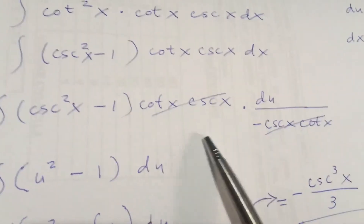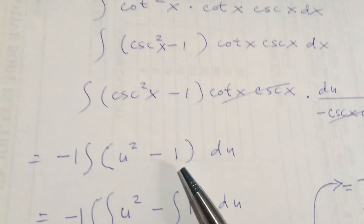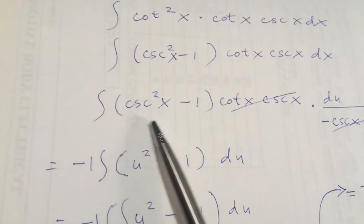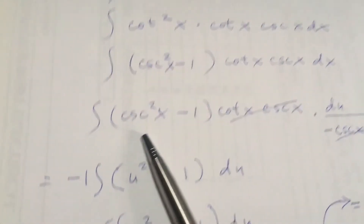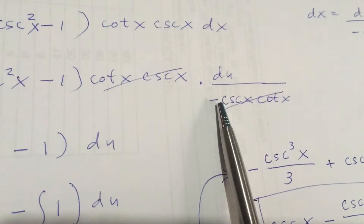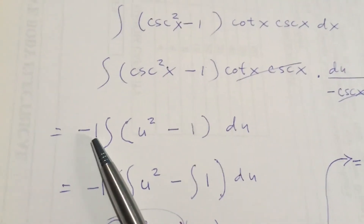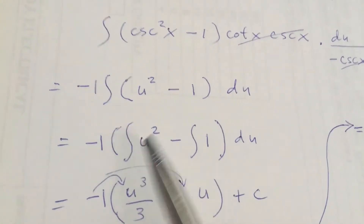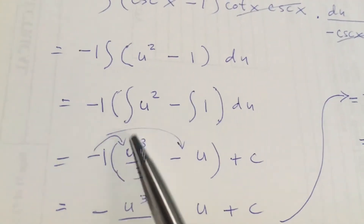Substitute the dx equivalent into the integral. When you substitute, the cosecant x and cotangent x terms cancel out. After that, substitute u for cosecant, and put the negative sign at the extreme left, treating it as negative one.